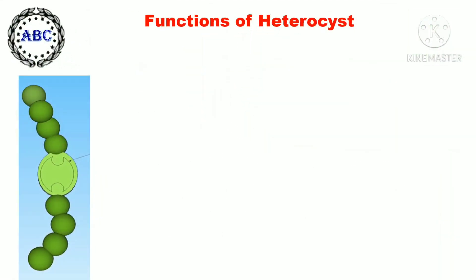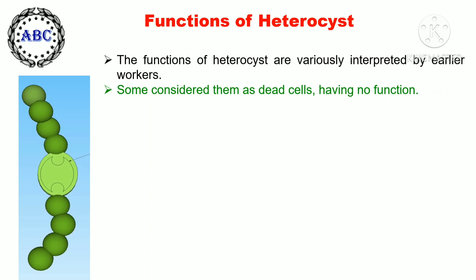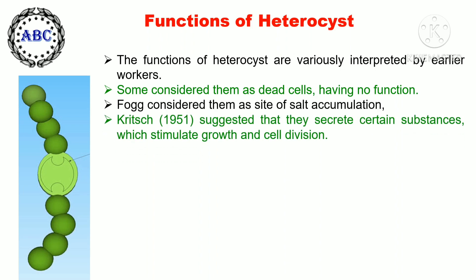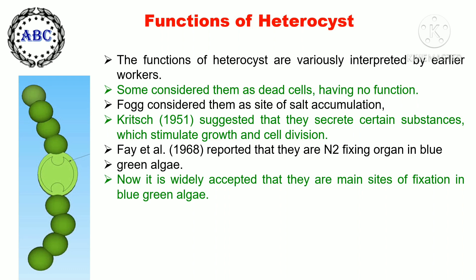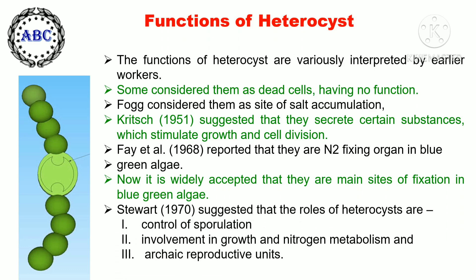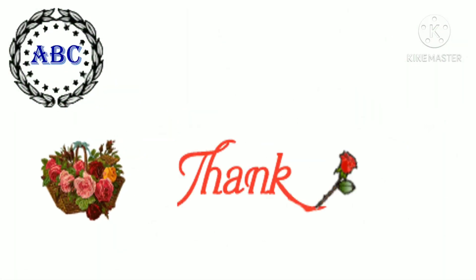The functions of heterocysts have been variously interpreted. Some earlier workers considered them as dead cells having no function; Fogg considered them as a site of salt accumulation; Christ in 1951 suggested they secrete certain substances which stimulate growth and cell division; Fay in 1968 reported that they are the nitrogen-fixing organ in blue-green algae. It is now widely accepted that they are the main sites of nitrogen fixation in blue-green algae. Stewart in 1970 suggested that the roles of heterocysts are: control of sporulation, involvement in growth and nitrogen metabolism, and serving as the main sites of these processes.